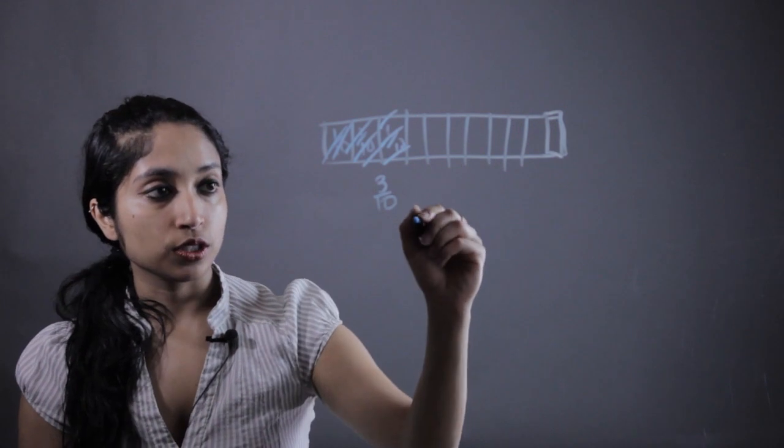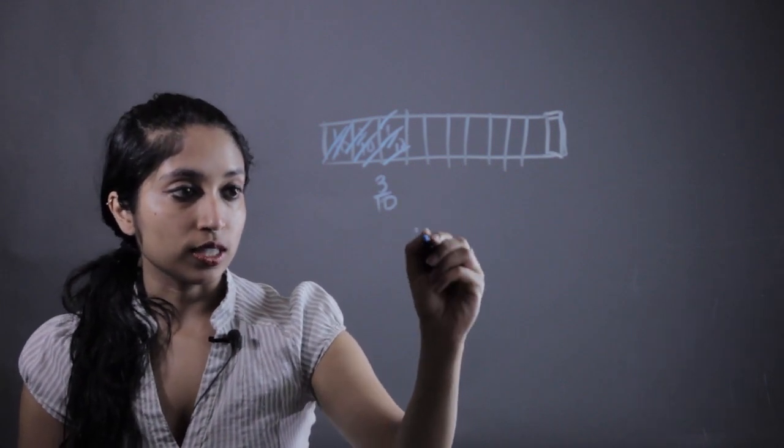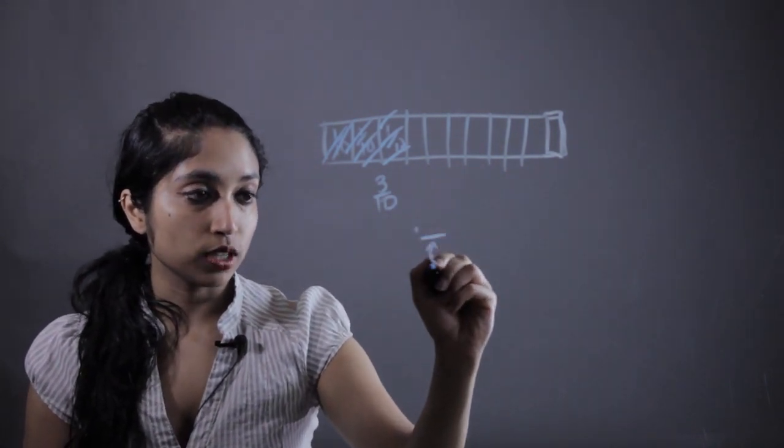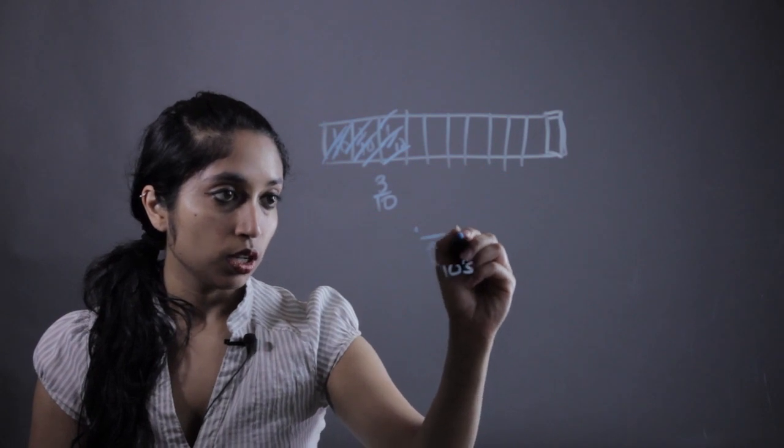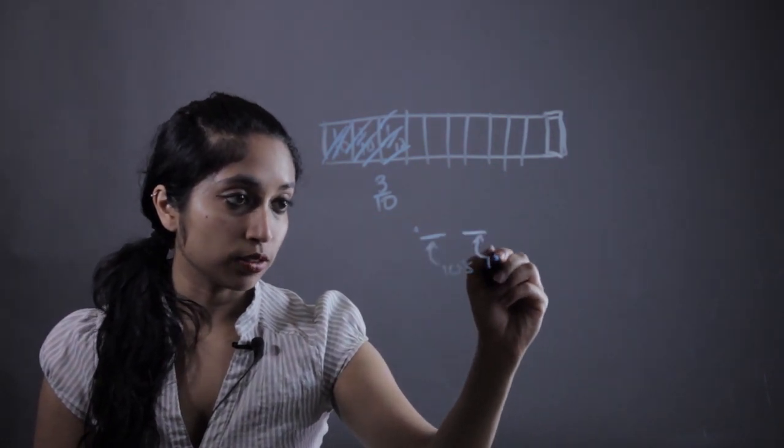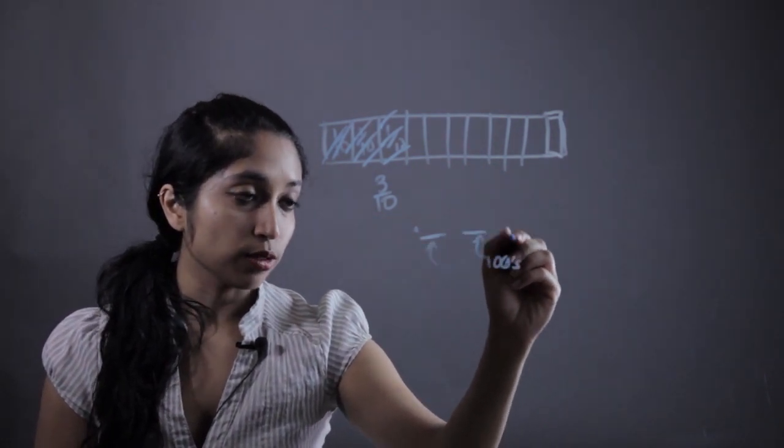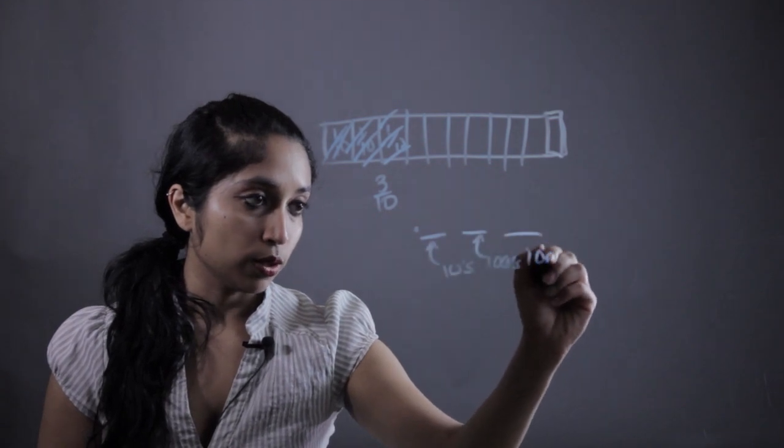When we introduce decimals, we're going to be introducing the fact that there's a tens place, which is the first spot after the decimal, one hundreds place, which is the second spot after the decimal, thousands place, just keeps going and going and going.